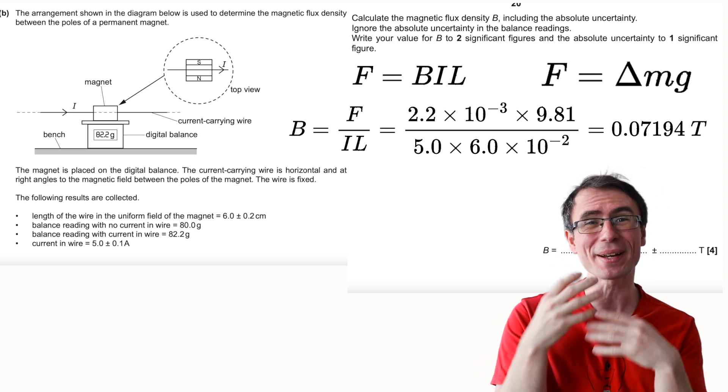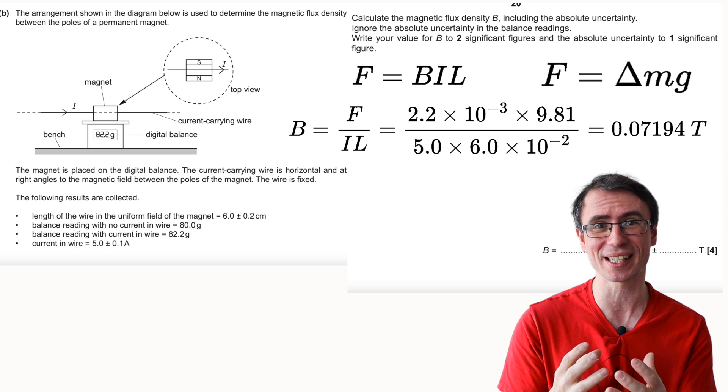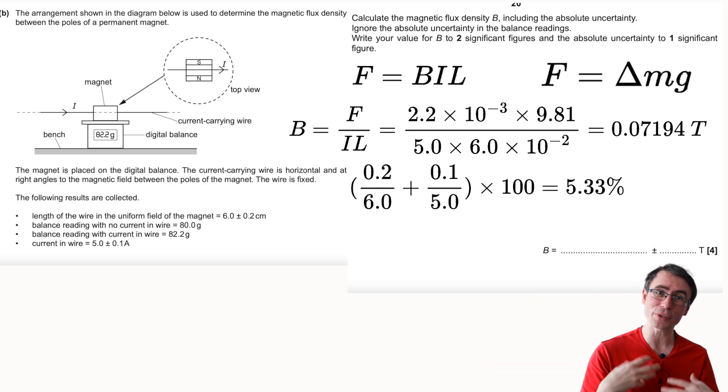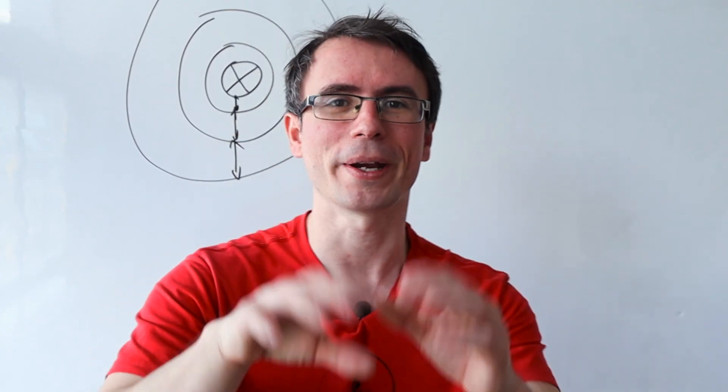Because we have multiplied and divided quantities, what we need to figure out is the percentage uncertainty of the system. There's only two values that we need to consider, and we can find the percentage uncertainty as the absolute uncertainty divided by the value, multiply by 100, and add them together. This will give us a percent, but this is not our absolute uncertainty.